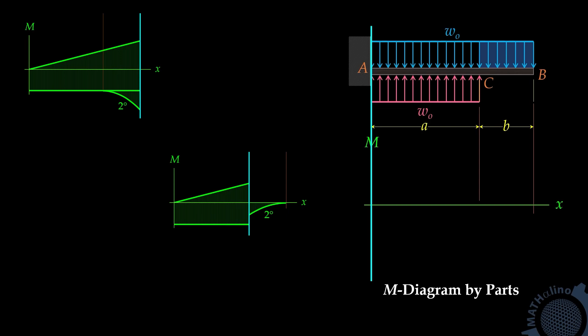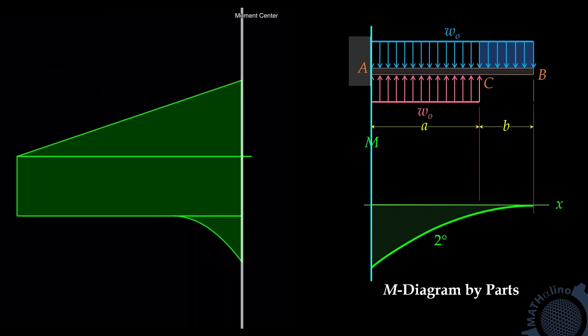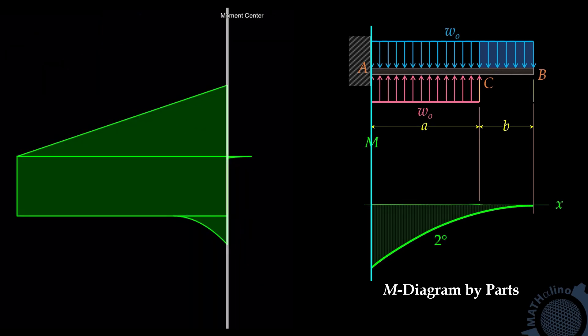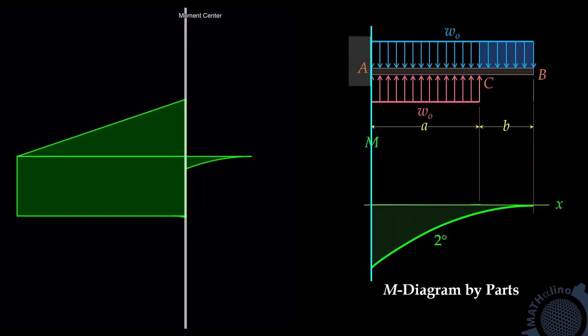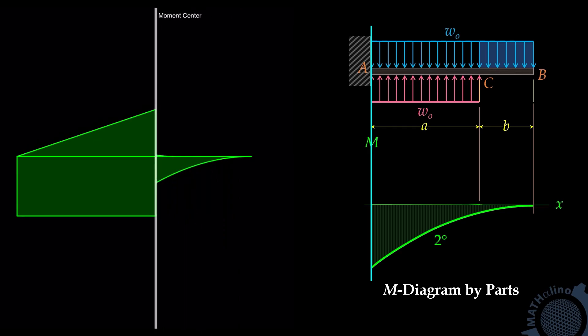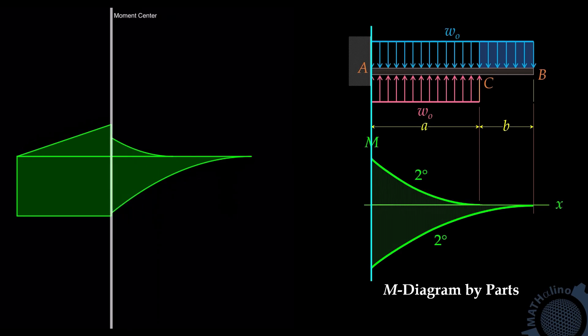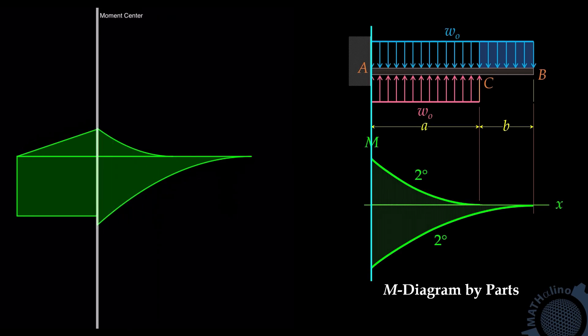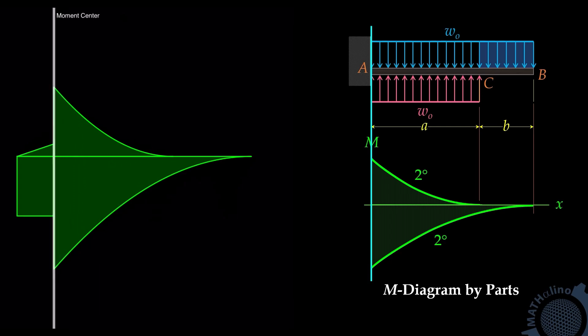Let us start with the downward uniform load. The moment diagram of that about point A is this parabolic spandrel, which is negative because it will bend the beam downward. And the moment diagram by parts due to that upward uniform load is this parabolic spandrel, and that is positive because it will cause the beam to bend upward.